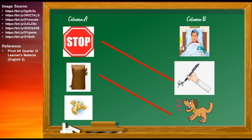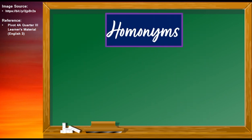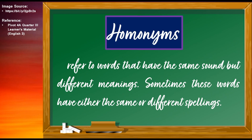The third item shows us the verb FLU and its homonym in column B is the word FLU. Again, homonyms refer to words that have the same sound but have different meanings. Sometimes these words have either same or different spellings. In English, there are many words that are considered homonyms.